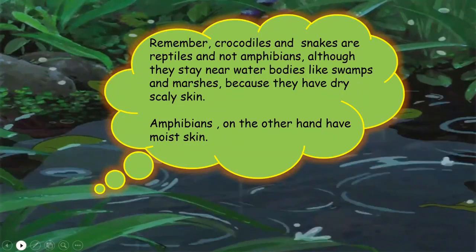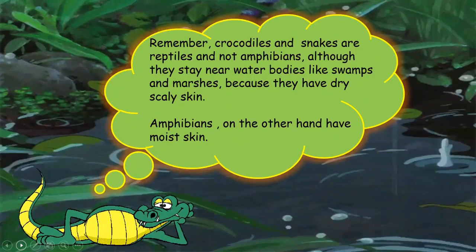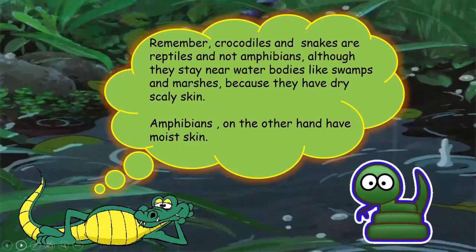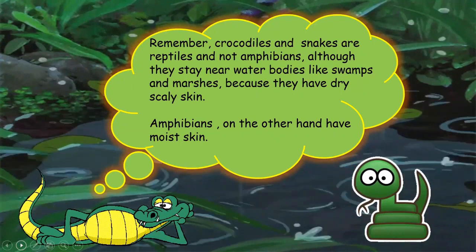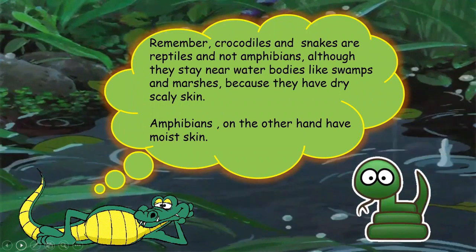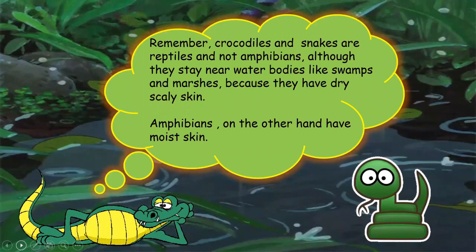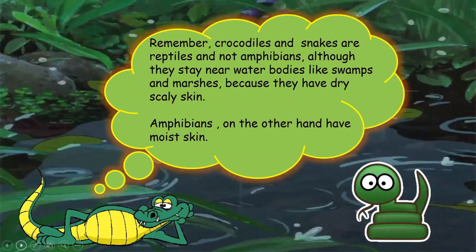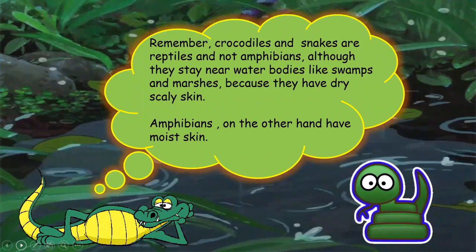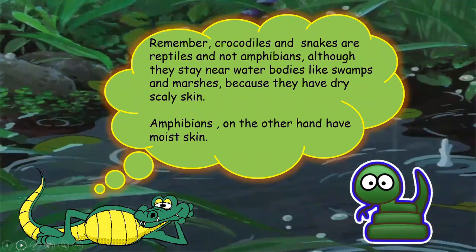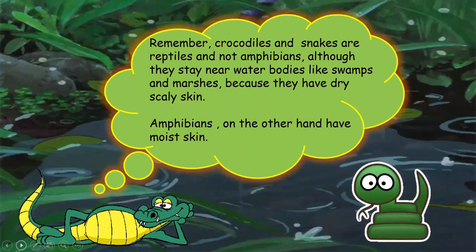Remember, crocodiles and snakes are reptiles and not amphibians. Although they stay near water bodies like swamps and marshes, they have dry, scaly skin. Amphibians, on the other hand, have moist skin.